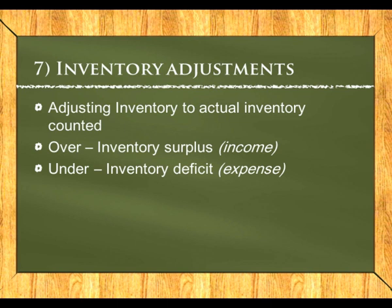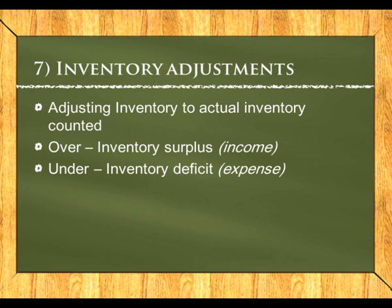For inventory adjustments, we adjust our inventory level to the actual counted amount. If we count more inventory than the books show, we debit inventory and credit an income account called inventory surplus. If we count less than the books show, we debit an expense account called inventory deficit and credit the inventory account.